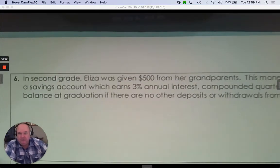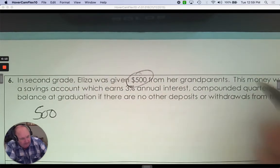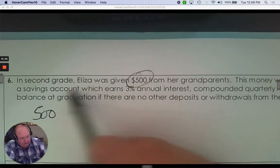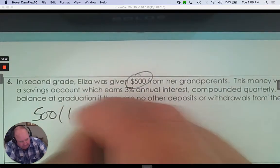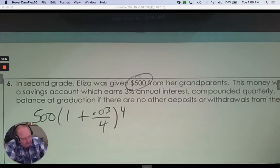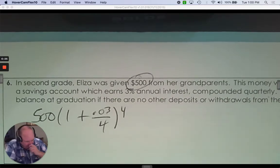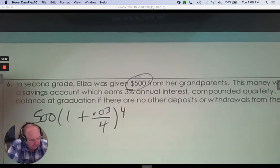Number six. In second grade, Eliza was given $500. This money was deposited into a savings account that earns 3% compounded quarterly. Find the account balance if there are no other deposits at graduation.